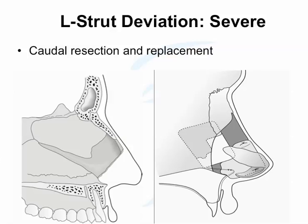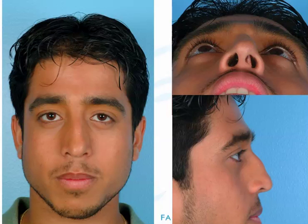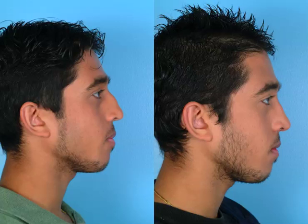If the septum is severely deviated, a portion of the septum may actually need to be removed and replaced with a straight segment. This was the case in this gentleman. The bottom of the septum was severely deviated to the left, causing his tip to be deviated in that direction, as well as obstruction. He also had a big bump on the bridge where the septum was overdeveloped. Surgically, I repositioned the septum along the front, added cartilage to the right side of the bridge, and reduced the cartilage from the top — allowing his nose to be straighter, to breathe more effectively, and the profile to be more refined.